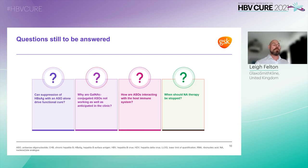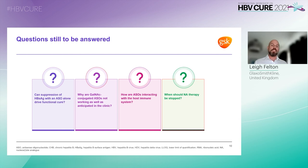My final slide summarizes some of the key questions that will need to be addressed as antisense oligonucleotides progress through clinical development for functional cure of CHB. Most of these questions are broadly relevant to the development of new therapies for CHB — for example, when to stop nucleoside analogue therapy in full and partial responders, and whether suppression of viral antigens alone will be sufficient to drive functional cure.